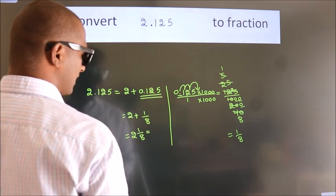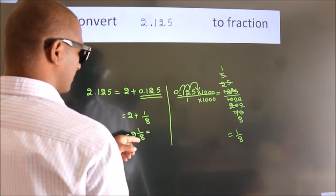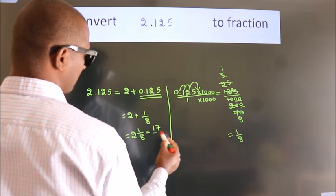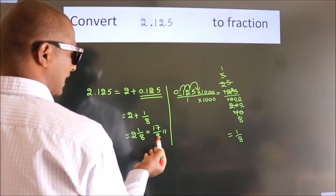And in improper fraction it is 2 into 8, 16 plus 1, 17 by 8 is our fraction.